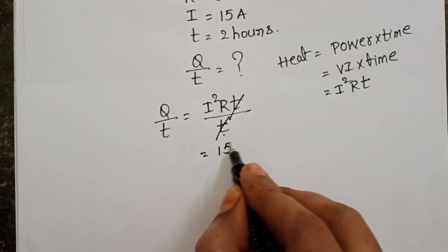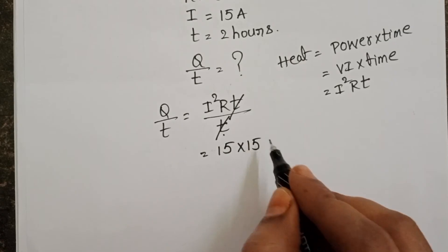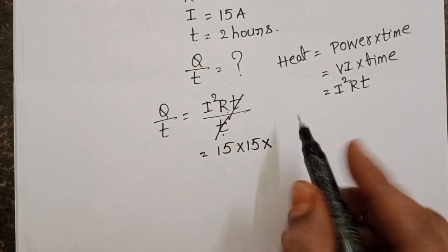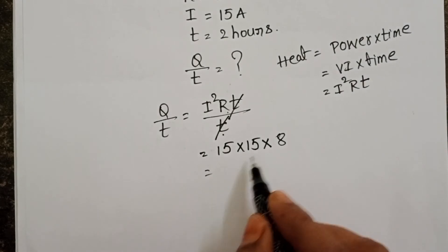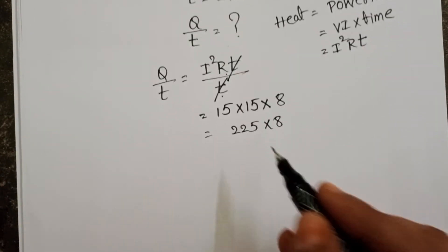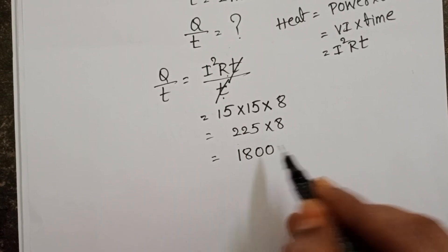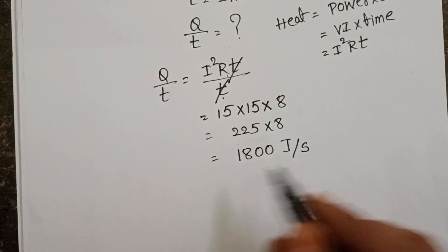Given electric current is 15 amperes. 15 into 15 into resistance is 8 ohms. 15 times 15 is 225. 225 into 8, it becomes 1800 joule per second.